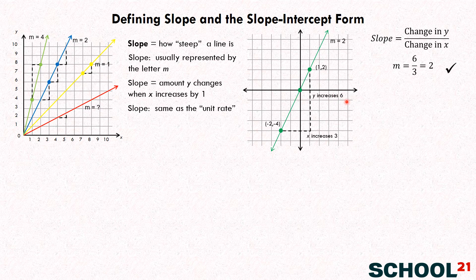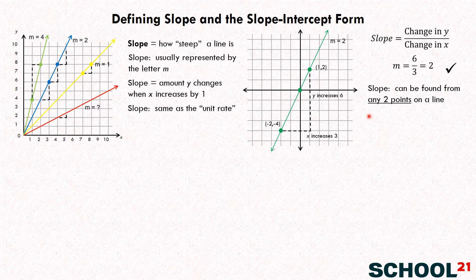And that's the same as the slope that we originally calculated with those first two points. So, we can put a check mark next to this. This is really working for us. Now we have a different way to find slope that's not just when X increases by one. So, another thing that we can say is that the slope can be found from any two points on a line. They don't have to be two points that are just right next to each other.